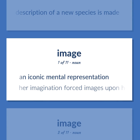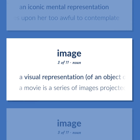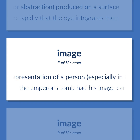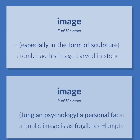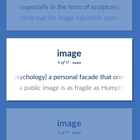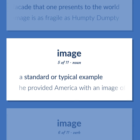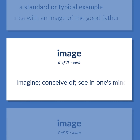Image: an iconic mental representation — 'Her imagination forced images upon her too awful to contemplate.' A visual representation of an object, scene, person, or abstraction produced on a surface — 'A movie is a series of images projected so rapidly that the eye integrates them.' A representation of a person, especially in the form of sculpture — 'The emperor's tomb had his image carved in stone.' In Jungian psychology, a personal facade that one presents to the world — 'A public image is as fragile as Humpty Dumpty.' A standard or typical example — 'He provided America with an image of the good father.' Imagine; conceive of; see in one's mind.